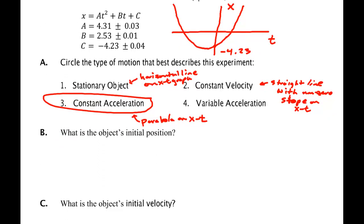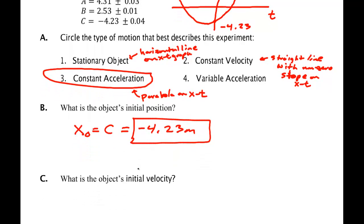What is the object's initial position? Well, that's given to you. X naught is C and it happens to be minus 4.23 meters. What was the object's initial velocity? And that's B, that's 2.53 meters per second.